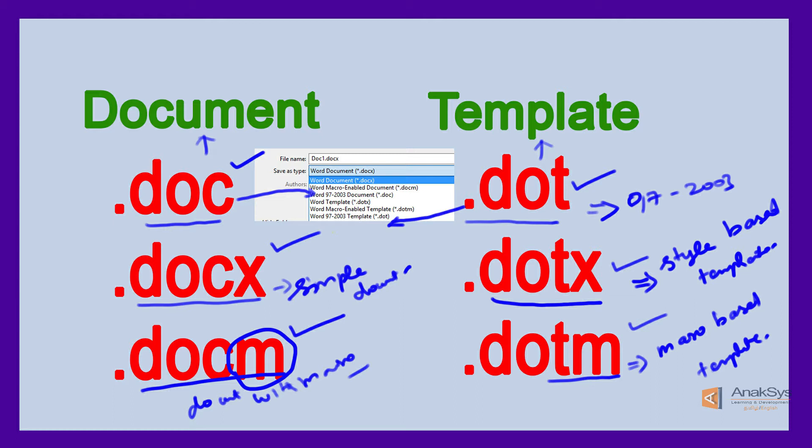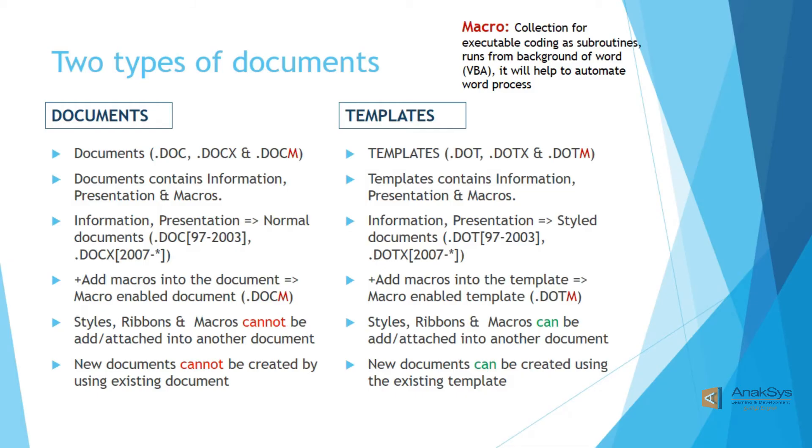The .docm is a different format — it is the macro-enabled document. That means we can store macros, subroutines, and word automation scripts inside the word file. This backend automation is called a macro. Whenever we need that automation, we run it. This is called the Word macro-enabled document.